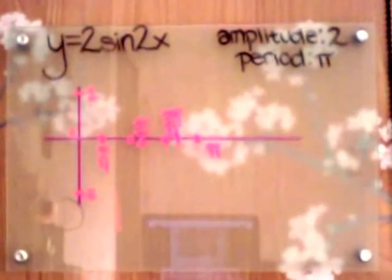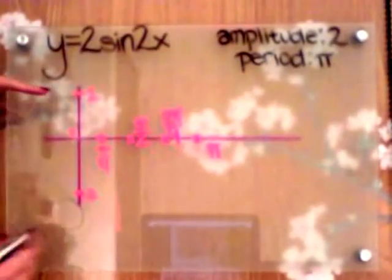On the y-axis, our amplitude is going to give us our range. So we have 2 and negative 2.